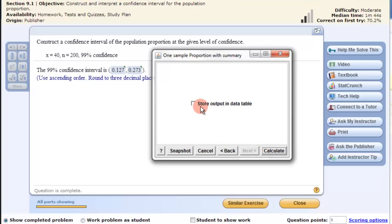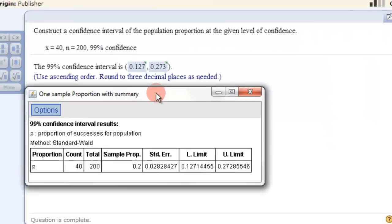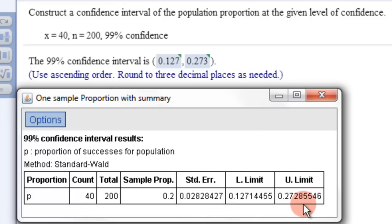Then you can store the output if you want in StatCrunch. Otherwise you click calculate and you just see the answer. So confidence interval 0.127 to 0.273. And that's what we have. You just have to round it off to three decimal places. So this is quite quickly done.